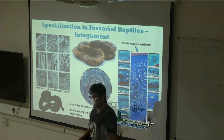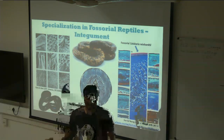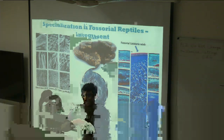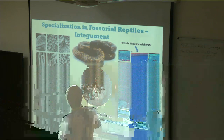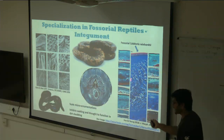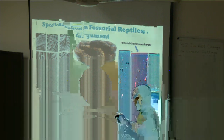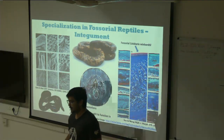There are also specializations in integument. Fossorial snakes have tiny micro-ornamentations on their scales, which are believed to reduce the wettability of the scale — when burrowing into waterlogged soil, water adheres to the soil but not the skin, reducing friction. Many fossorial snakes also have a very thick dermis with a huge layer of collagen bundles. This thick dermis reduces the wear and tear from friction when burrowing into the soil.